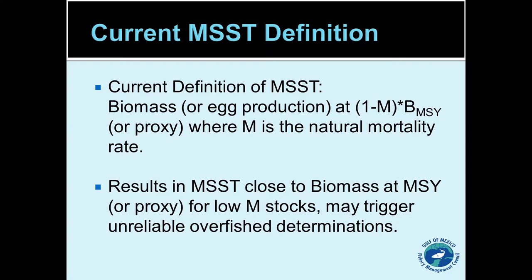Currently, for most stocks where we have an MSST defined in the reef fish fishery management plan, we use a formula: MSST equals one-minus-M times BMSY, where M is the natural mortality rate. This ties the buffer between MSY and MSST to the natural mortality rate of the stock, which is also related to the longevity of the stock. For a long-lived fish with a natural mortality of say 0.1, this formula would set the MSST level at 90% of the MSY level, which is fairly close, because we wouldn't expect too much fluctuation in that stock.